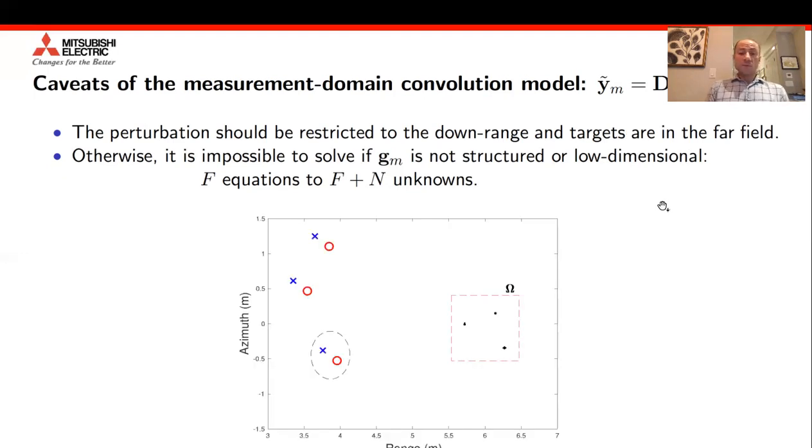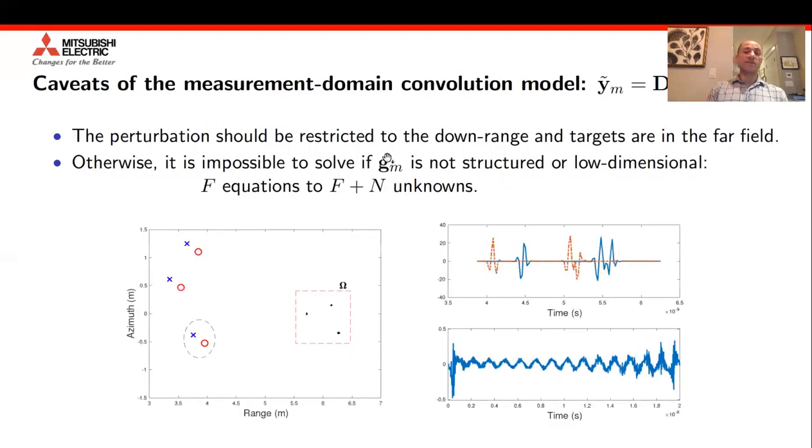Things would have been completely fine if we're able to find a low dimensional model for that vector G_M. However, that is actually very difficult to find. Here's an example where we see that the relationship between the measurements that are observed by the antenna at location of the blue X and the antenna at the red circle is what you see over here. What we realize is that the mapping from the blue plot to the red plot is not a low dimensional mapping.